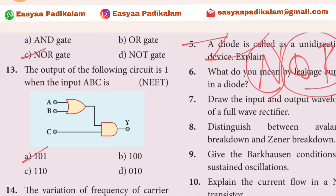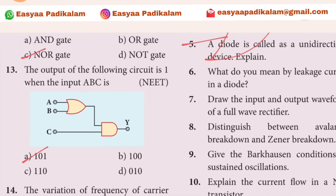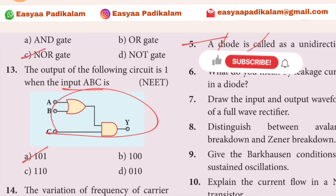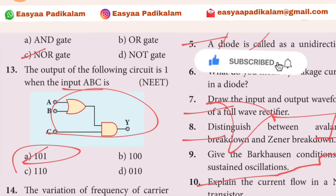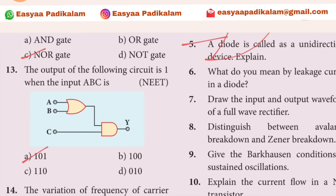The output of the following circuit is 1 when the input is ABC. If the output is 1, we can see the input from the diagram.